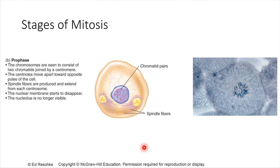The first stage of mitosis is prophase. This is when the chromosomes condense. The DNA has already finished replicating — that was during the S phase. Now we're talking about during the M phase. In prophase, the chromosomes condense and the nuclear envelope also starts to disintegrate.